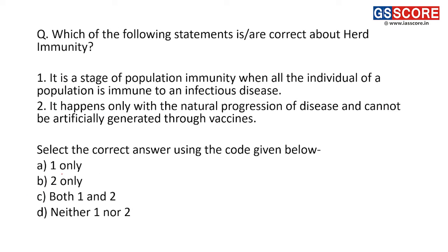Next question: which statements are correct about herd immunity? Herd immunity is a stage where the R-naught — the passage of disease from one person to another — reduces. First statement: it is a stage when all individuals of a population are immune to an infectious disease — this is incorrect. Herd immunity is considered achieved when 80 percent of individuals have acquired immunity, not all individuals.